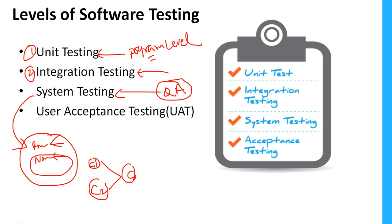System testing is the third level of testing, and it is completely the QA team's responsibility to conduct end-to-end testing. When we receive the build we don't see the code, so this falls under black box testing. Unit testing and integration testing fall under white box testing because developers know the logic they've written internally. As testers, we don't need to know what's written internally; at a high level we test whether the application works according to customer requirements.